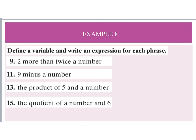For example eight, we define the variable ourselves and write an expression for each phrase. 'Two more than twice a number' gives 2n plus 2. 'Nine minus a number' gives 9 minus x. 'The product of five and a number' gives 5y. And 'the quotient of a number and six' gives t divided by six.